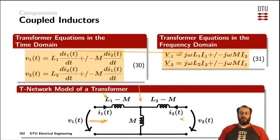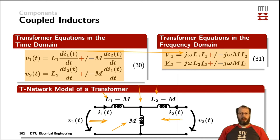And vice versa, from the secondary side, voltage V2 divided by current I2 with the primary side open would see the inductance L2. The coupling of both sides is indicated by the mutual inductance M. Despite the T-network model of a transformer, there are also other ways of describing the same physical phenomena in other electrical circuits.